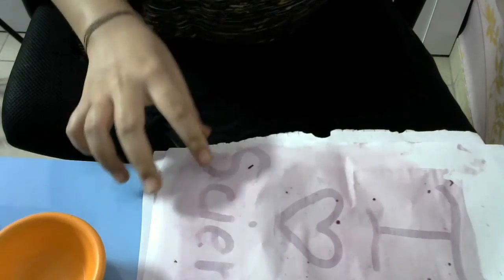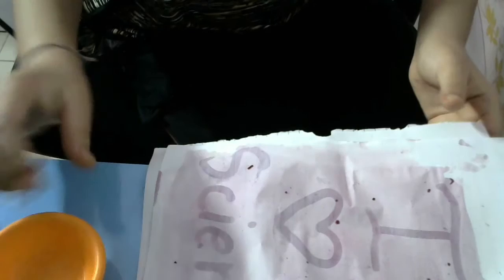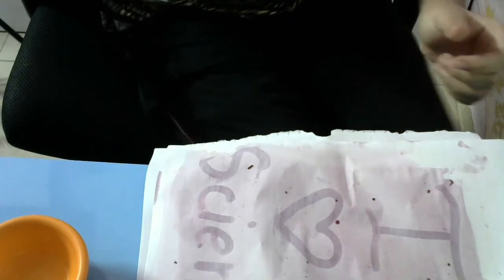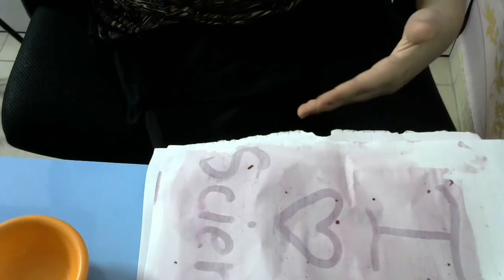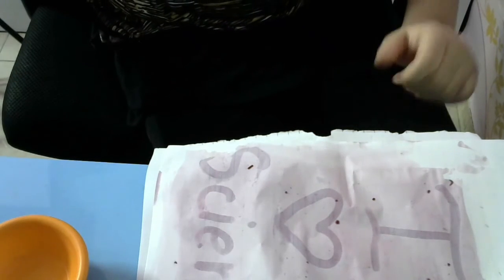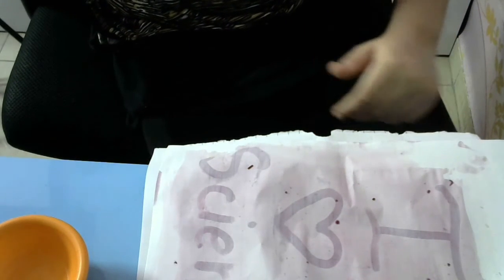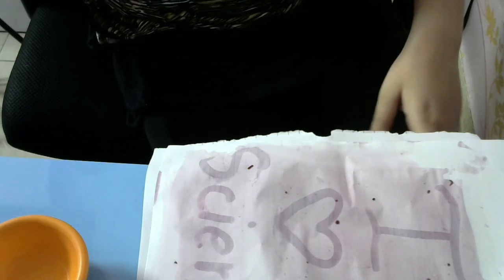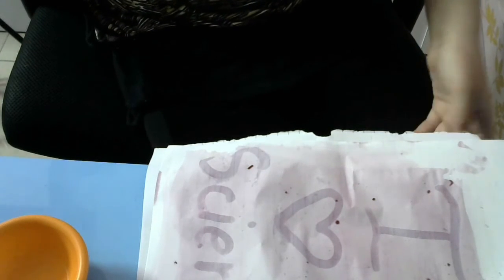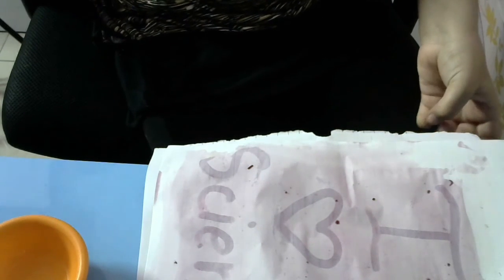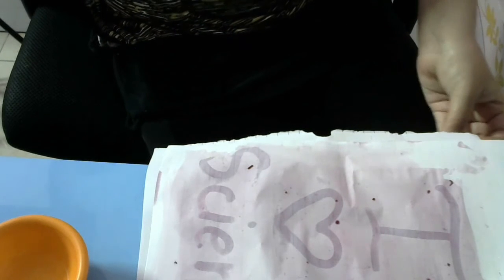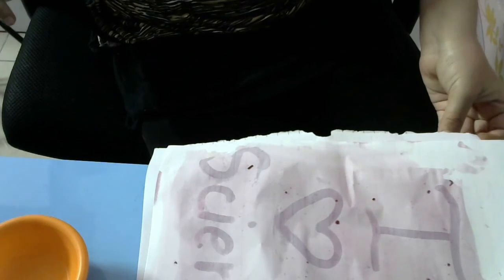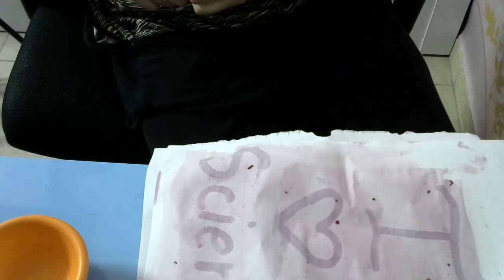And why it is happening, because this beetroot juice is a natural indicator. And we know what an indicator is. An indicator is a substance which gives specific results with acids and bases. And it changes its color when added to an acid or base. And it gives different colors with both.